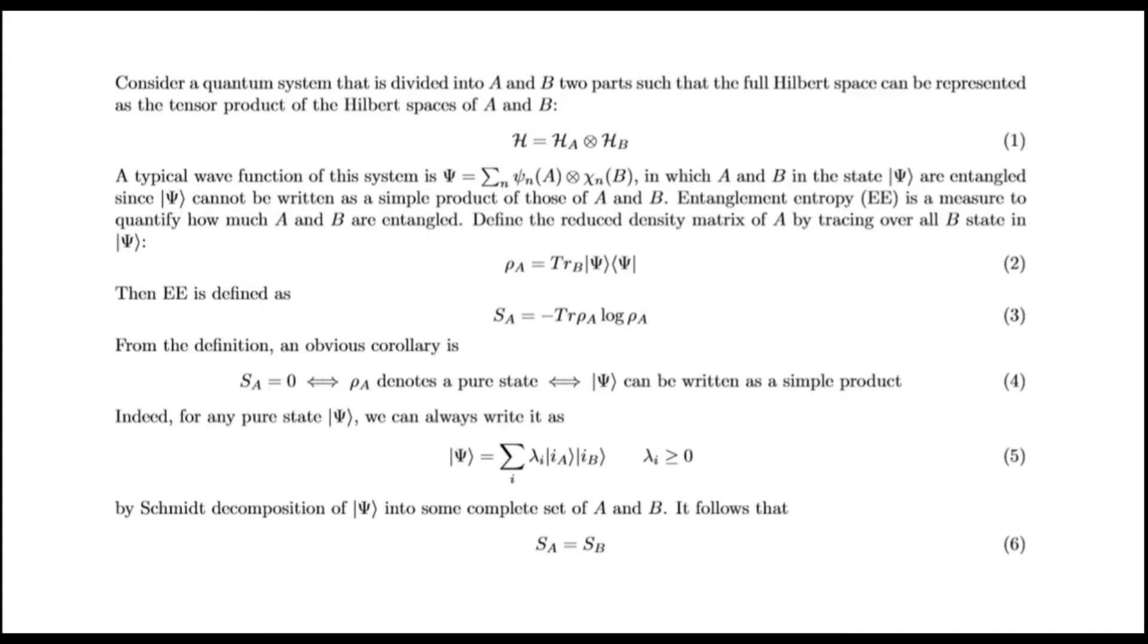Entanglement entropy is a method to quantify how much A and B are entangled. Define the reduced density matrix of A by tracing over all B states in ψ. Then entanglement entropy is defined as this.